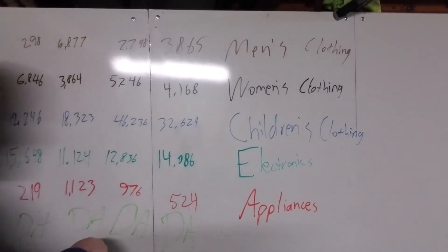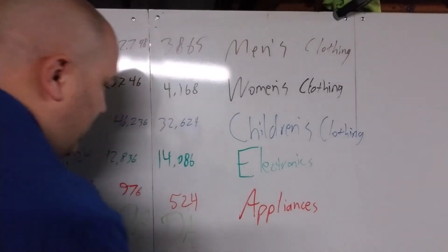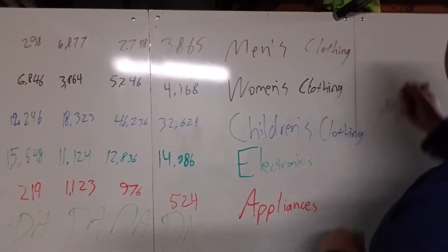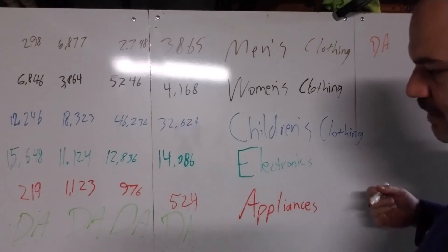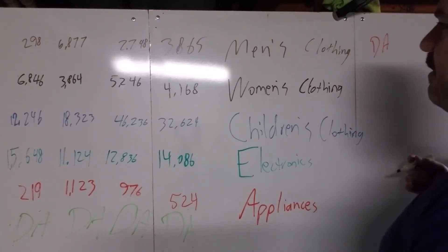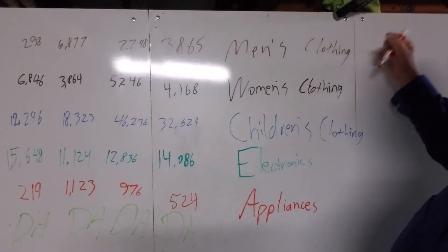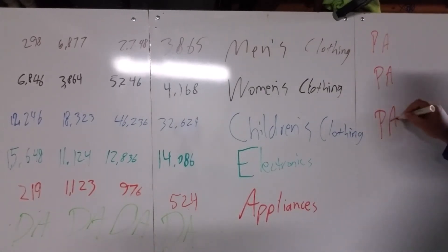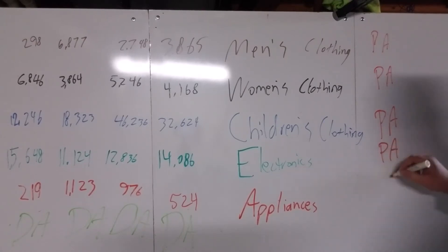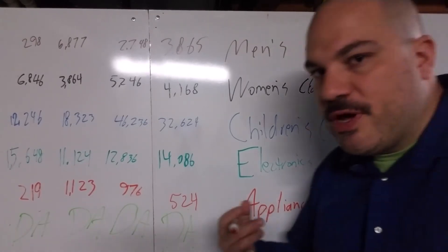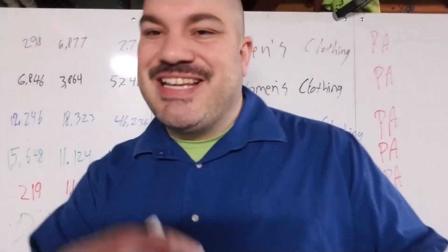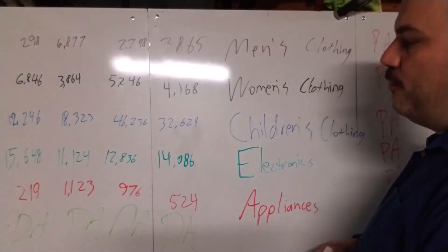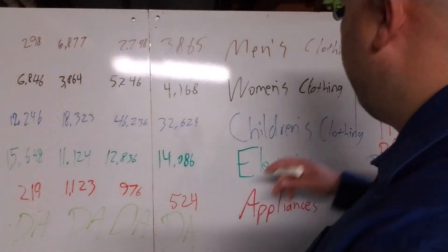Over here let's do a department average — and then a page average, page average, page average. The reason why I'm not doing this with actual numbers is because I don't have to. We have an Excel spreadsheet we're going to use for this.